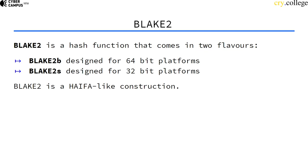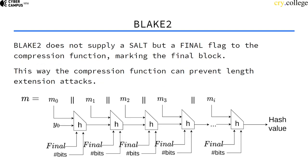BLAKE2 is a HAIFA-like construction, very similar to HAIFA but not exactly the same. BLAKE2 does not supply salt, but it has an additional input called a final flag, letting the compression function know if it's in the last block. That way, the compression function can actually prevent length extension attacks that we'll talk about a bit later.